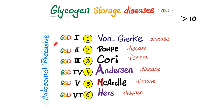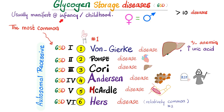All of them are autosomal recessive, although some can have more than one pattern of inheritance. These disease symptoms usually manifest in infancy or early childhood. There is no predilection towards females or males. Von Gerke's disease is the most common, though some textbooks claim type 6 is now the most common. Von Gerke affects the liver, has high uric acid increasing the risk of gout, and can have anemia.